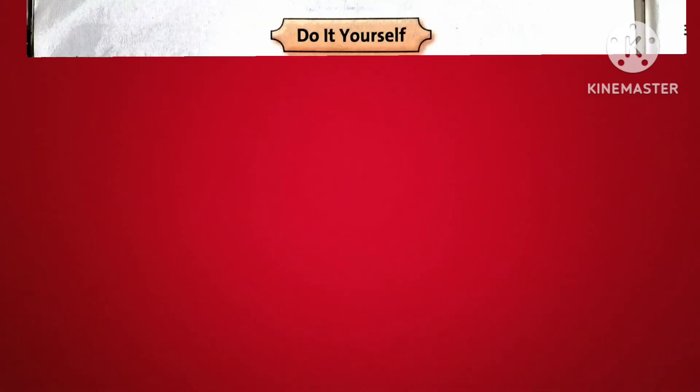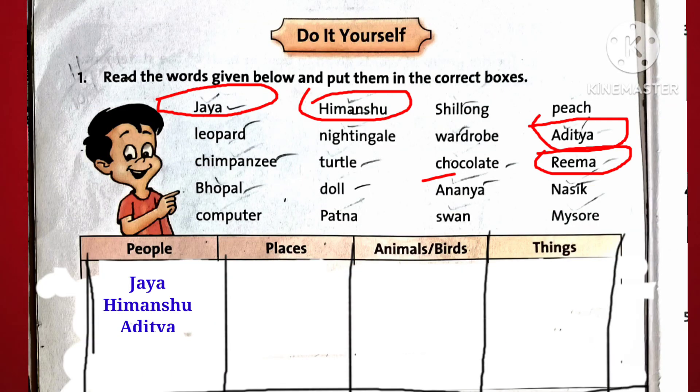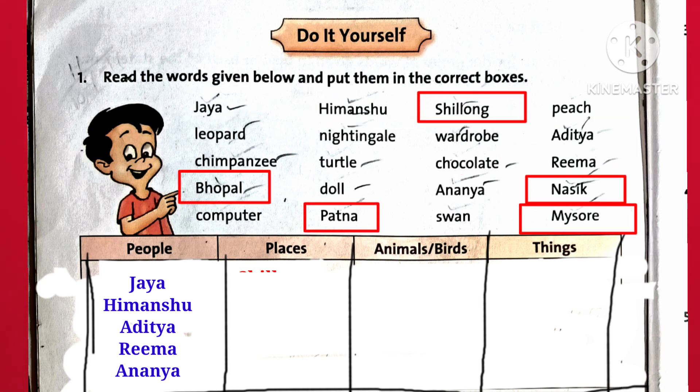This is the page. Now let us find out the persons: Jaya, Himanshu, Aditya, Rima, Ananya.